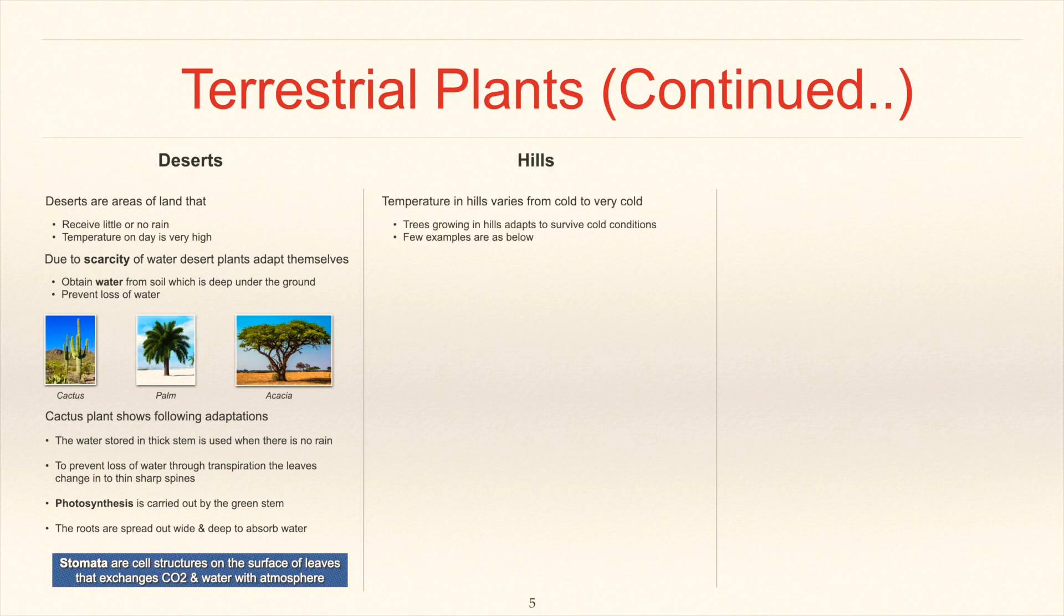Temperature in hills varies from cold to very cold. Trees growing in hills adapt to survive cold conditions. Few examples of plants from hills are pine, fir and cedar. Cedar is also known as deodar.